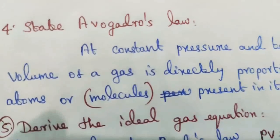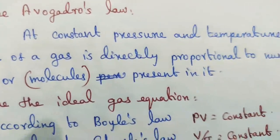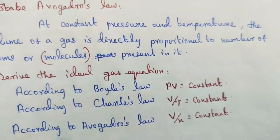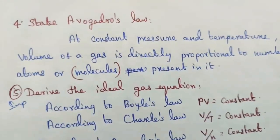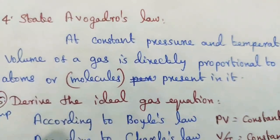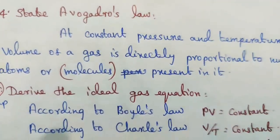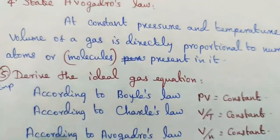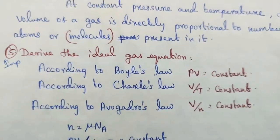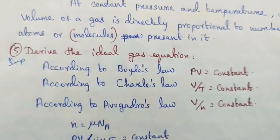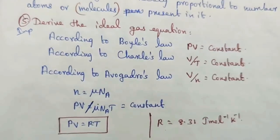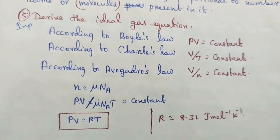Question number four: state Avogadro's law. At constant pressure and temperature, the volume of a gas is directly proportional to the number of atoms or molecules present in it. Question number five, important detailed question: derive the ideal gas equation. According to Boyle's law: PV = constant. According to Charles' law: V/T = constant. Since n = μNA, we get PV/(μNA·T) = constant, giving PV = RT. Study well — all the best, thank you.